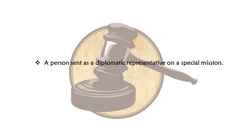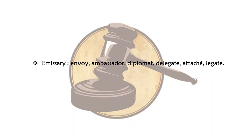A person sent as a diplomatic representative on a special mission — what would he be called? He'd be called an emissary, E-M-I-S-S-A-R-Y. Synonyms would be envoy, ambassador, diplomat, delegate, attaché and legate.